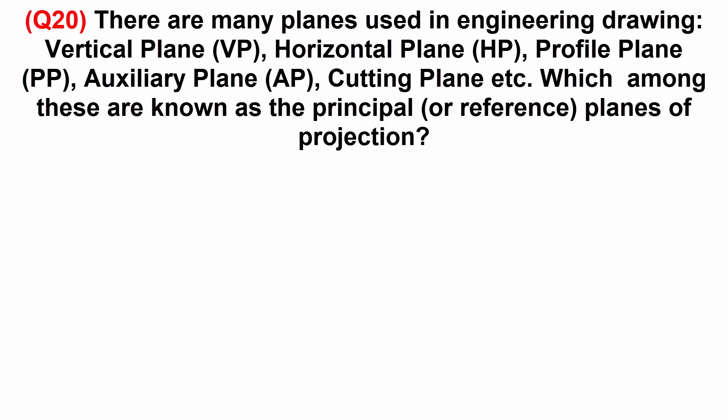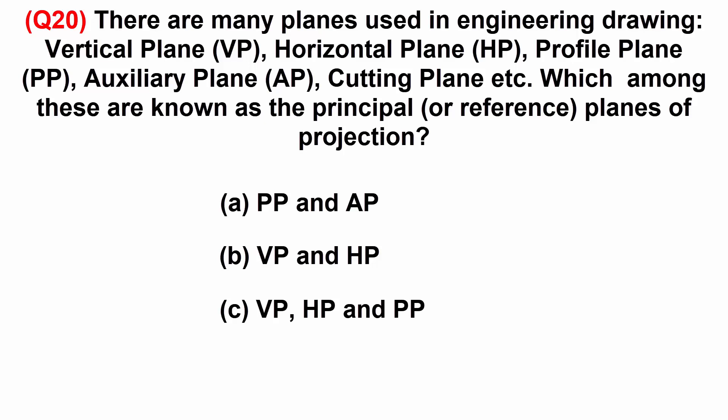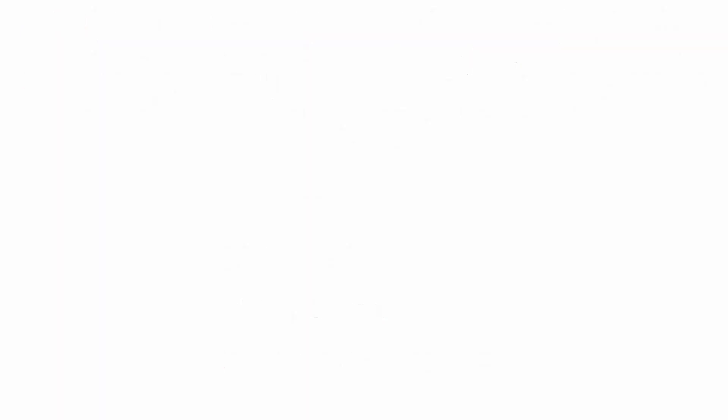There are many planes used in engineering drawing — vertical plane, horizontal plane, profile plane, auxiliary plane, cutting plane, etc. Which among these are known as the principal or reference planes of projection? A: profile plane and auxiliary plane. B: vertical plane and horizontal plane. C: vertical plane, horizontal plane, and profile plane. D: auxiliary plane and cutting plane.